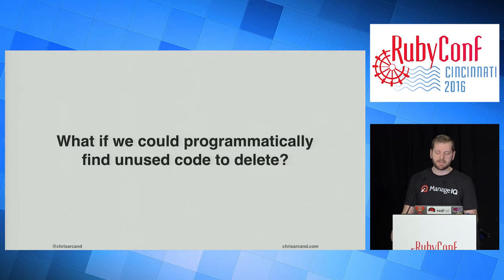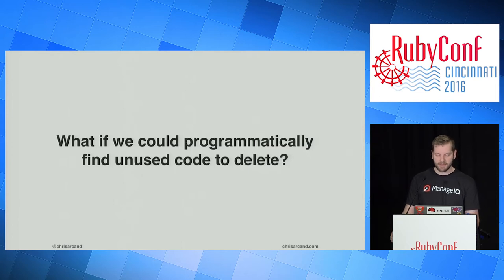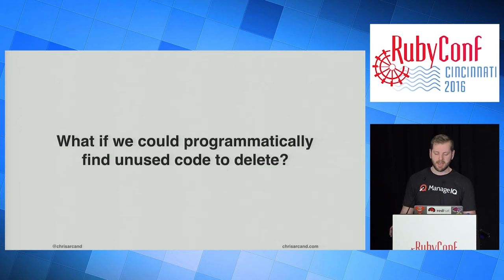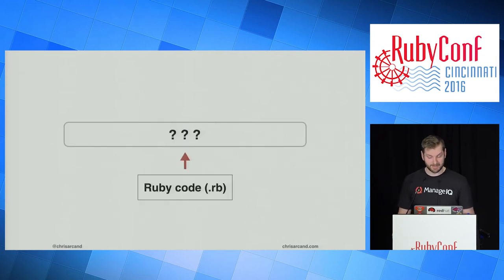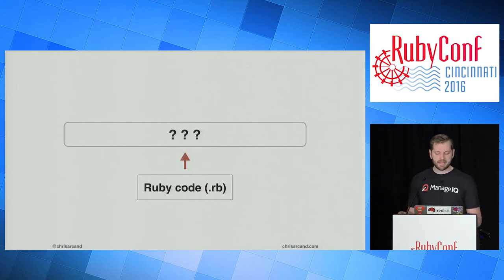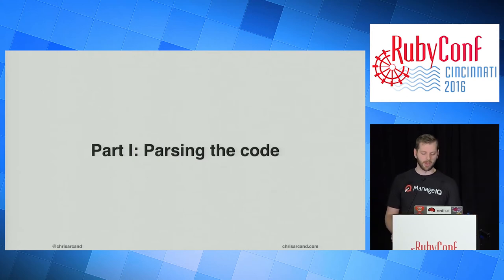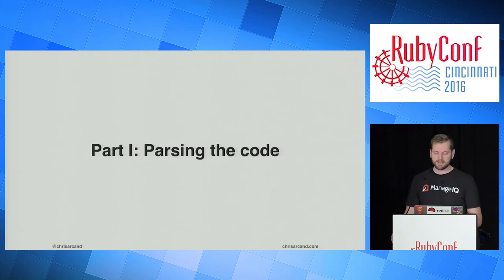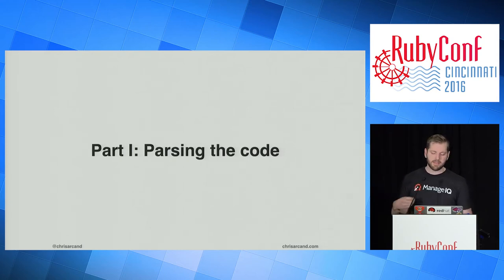Today I'm going to describe how a static code analyzer can be built to find potentially uncalled methods. Now because Ruby is a dynamic duck-typed language and this analyzer is only static, it's not going to be 100% accurate. But it has the potential to point out areas in our code where we can clear out some cruft. We start with Ruby code that we want to analyze, and the first thing we need to do is transform it into a data structure we can reason with — which brings us to part one: parsing the code. It's important for everyone to understand how language parsing works from the ground up.